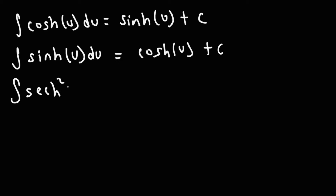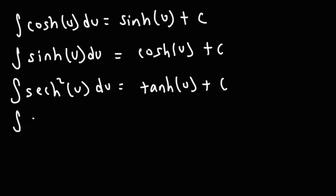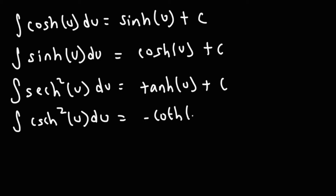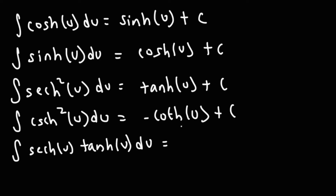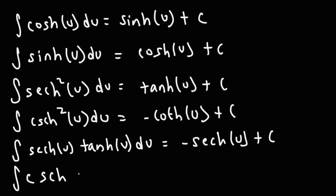For hyperbolic secant squared, the integral is going to be hyperbolic tangent plus C. The integral of hyperbolic cosecant squared is negative hyperbolic cotangent. The integral of hyperbolic secant tangent is negative hyperbolic secant, and the indefinite integral of hyperbolic cosecant cotangent is negative hyperbolic cosecant.